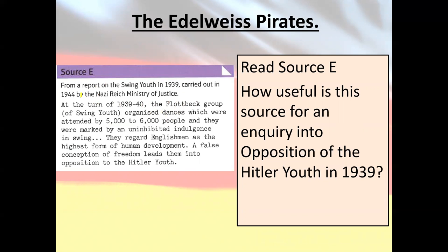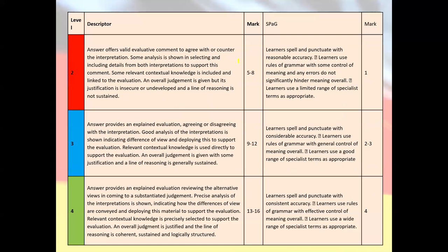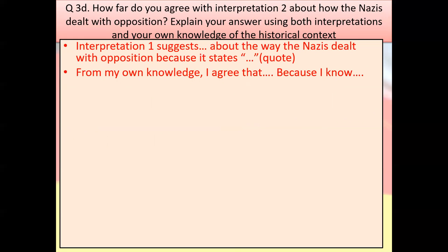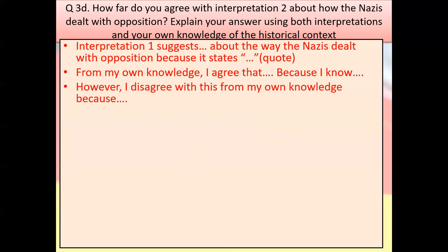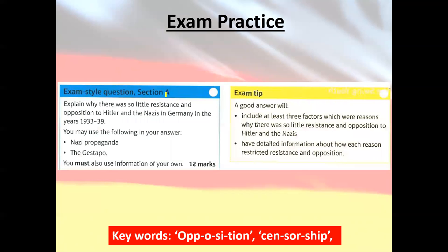Once you've done that, come back and read Source E and answer the question: how useful is it for understanding opposition youth in 1939? There are also two practice exam questions — you can choose which one to do. One focuses on interpretations with more structure and starter sentences provided; the other has less guidance and is more open. Choose whichever suits your learning style and ability — you only need to pick one.